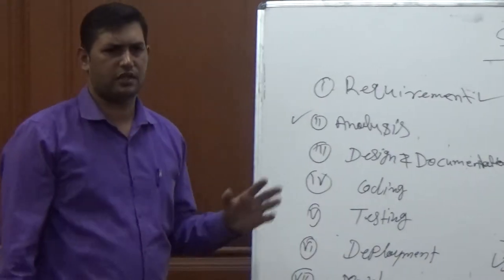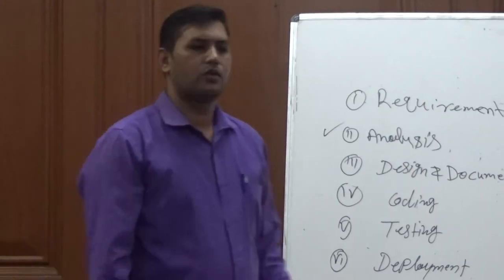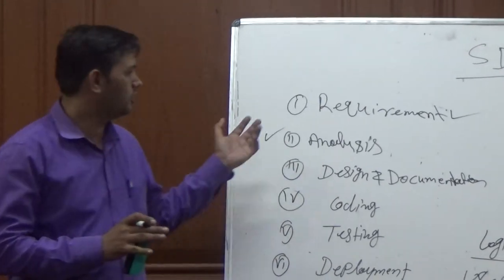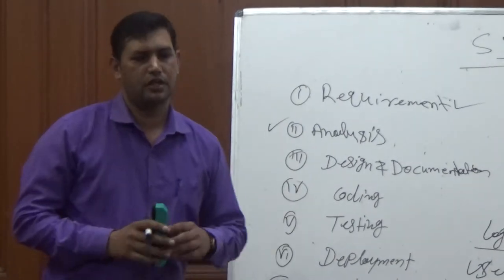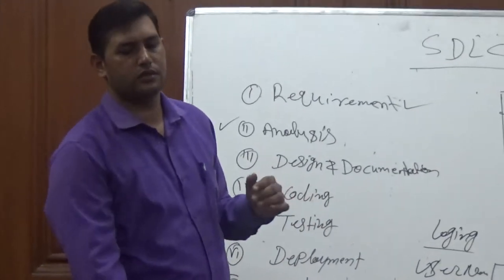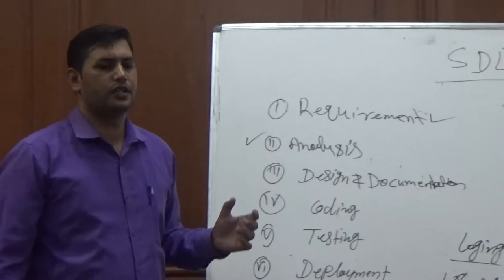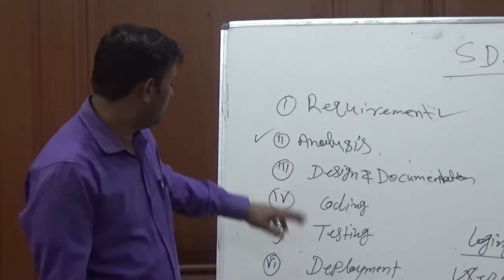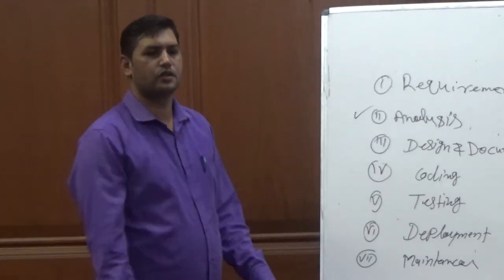After the designer completes the design part, the coding phase begins. The coding department is the main part of software development in the software industry. The coding department codes the particular project and unit testing is done by the developer.